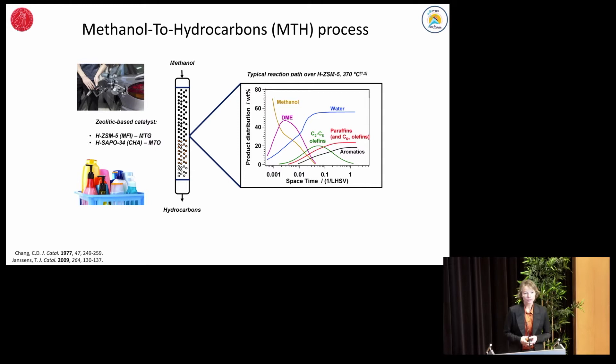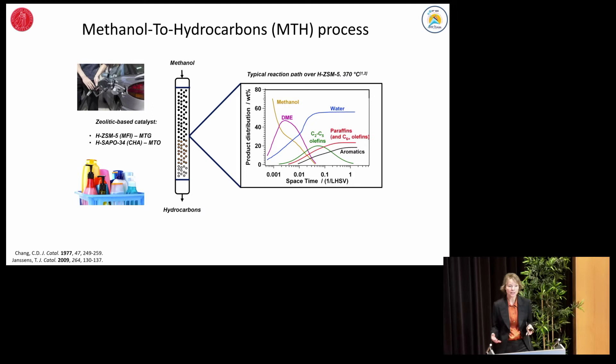Starting with the methanol to hydrocarbons process, it is an autocatalytic reaction that is catalyzed by Brønsted acidic zeolites and zeotypes. The zeolite and process conditions may be tuned to selectively produce light olefins or gasoline fractions. In industry, light olefins production employs catalysts with chabazite topology, where only linear aliphatics may elute from the pores. Gasoline production employs catalysts with MFI topology, where products up to tetramethylbenzene may elute.